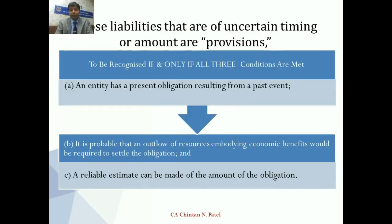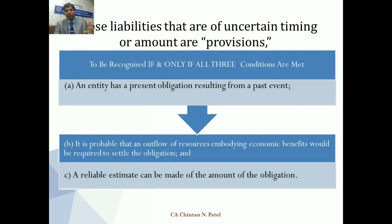For provisions, all three conditions must be fulfilled: one, present obligation; two, probable outflow; three, reliable estimate. For contingent liabilities, you have present obligation but either condition two or three is not fulfilled — outflow is not probable or reliable measurement cannot be done. If it is a possible obligation, it is also treated as a contingent liability. If it is a contingent liability, you must disclose it unless it is a remote possibility.